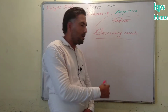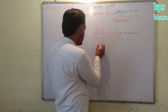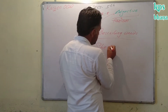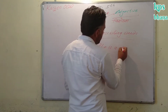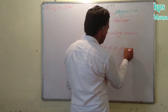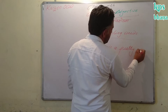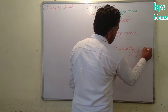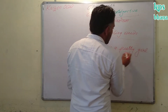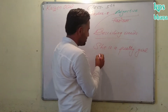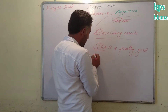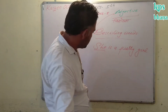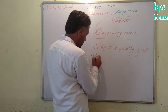For example: 'She is a pretty girl.' Here, 'she' is a pronoun, 'girl' is a noun, and 'pretty' is the describing word — that is, the adjective.